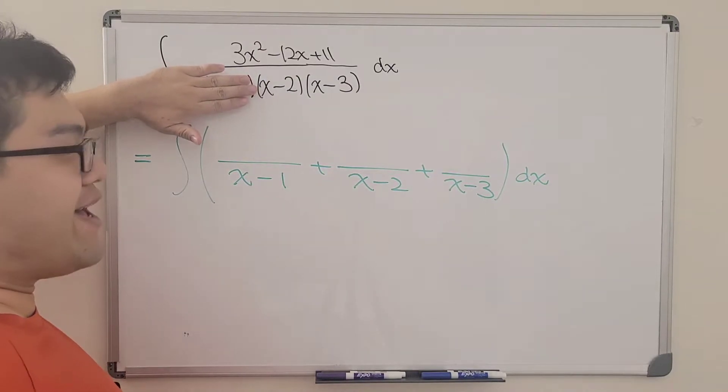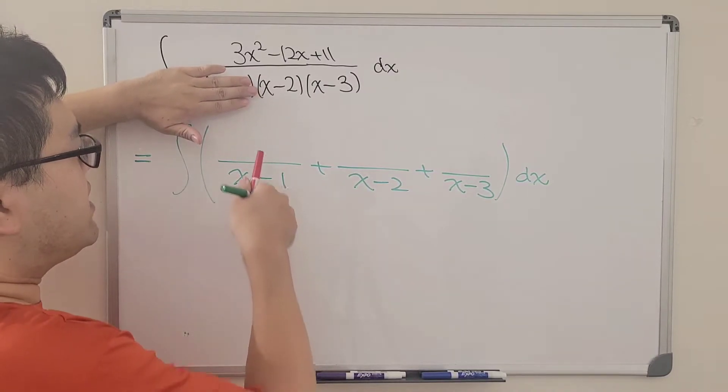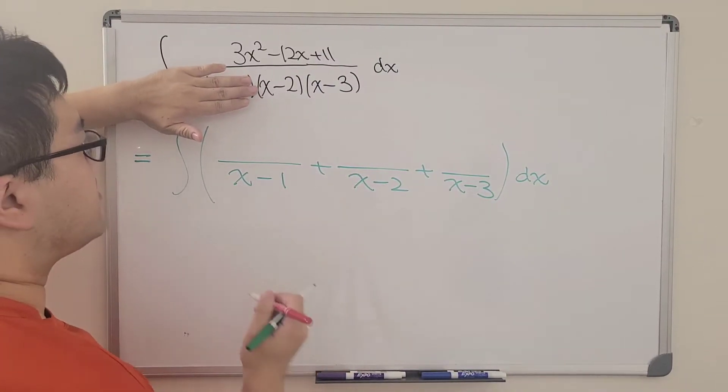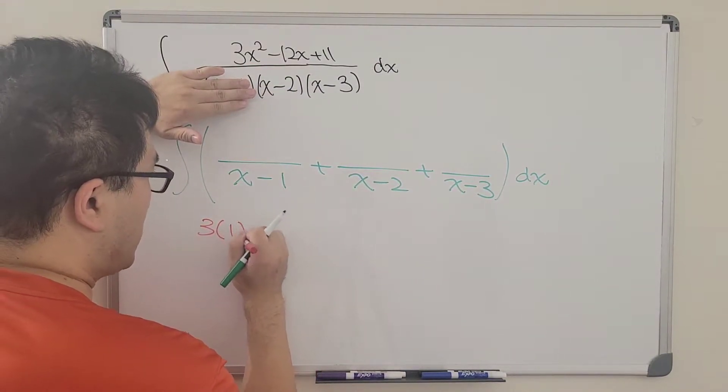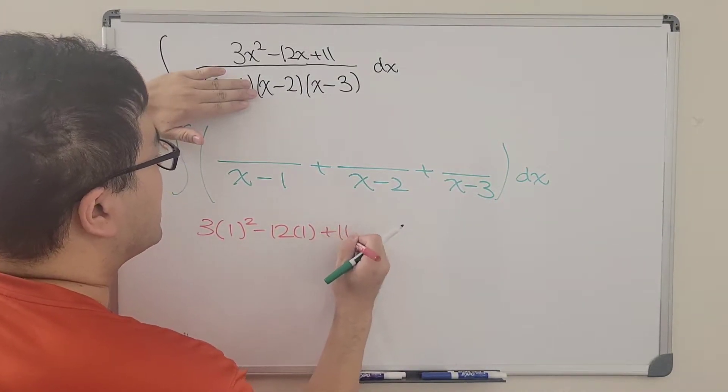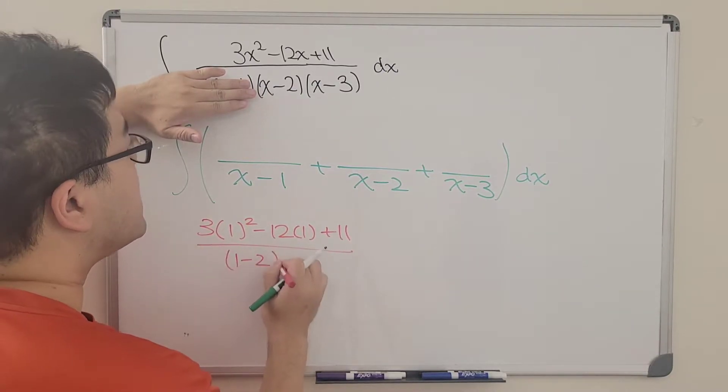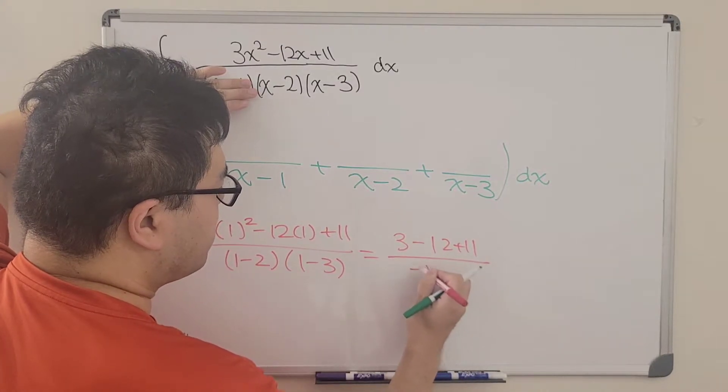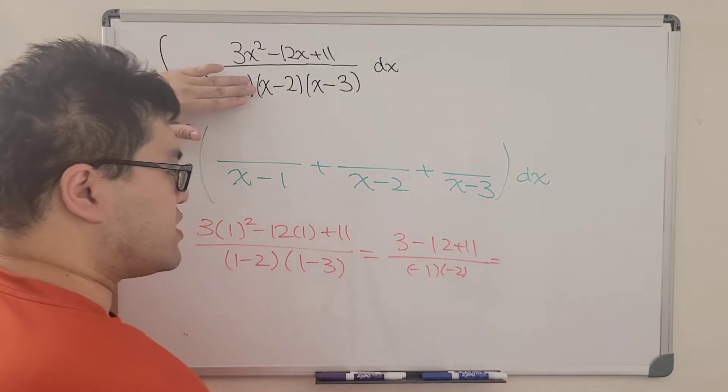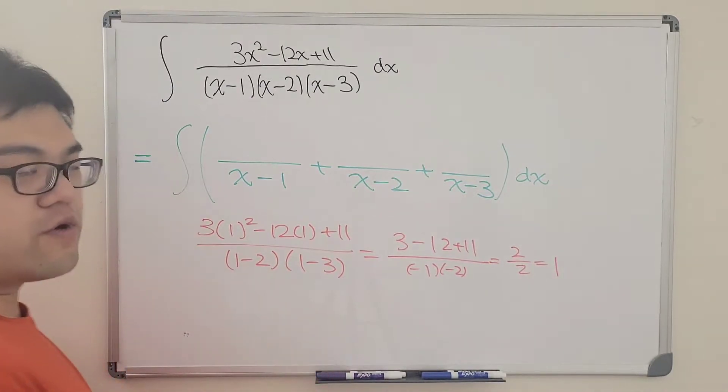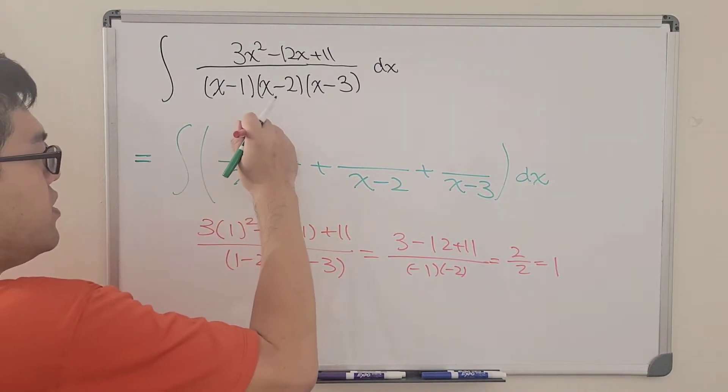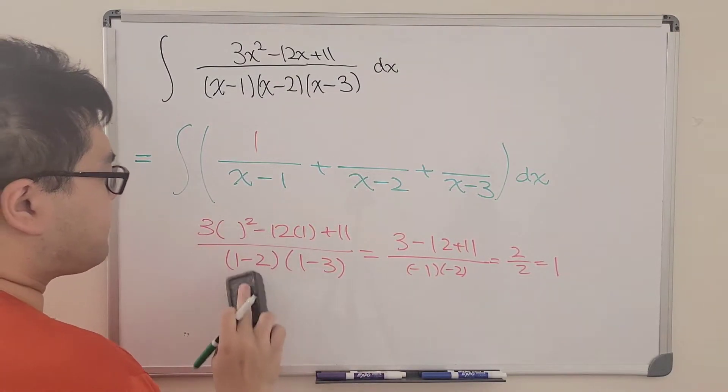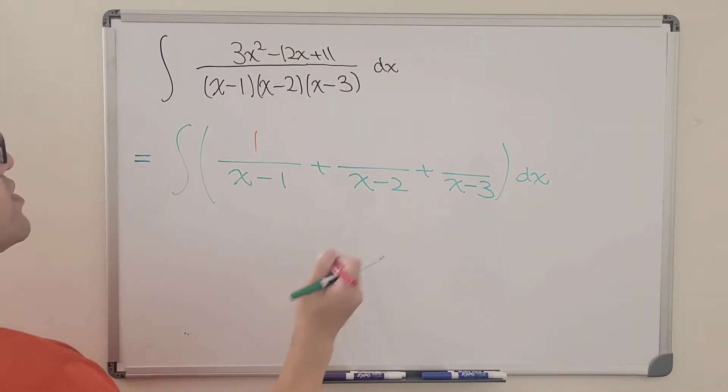Well, for example, for x minus 1 term, we're going to look at the original function here and we're going to cover the x minus 1 term so that now we only have the remaining part. Then we're going to replace the x by 1 and find out what the value is and that will give us the numerator of x minus 1 term. So let me use the red pen to do the structure. We get 3 times 1 squared minus 12 times 1 plus 11 all over 1 minus 2 times 1 minus 3, which is, if we simplify, we get 3 minus 12 plus 11 all over negative 1 times negative 2. And if we simplify again, we get 2 over 2, which is 1. Great! We found the constant term here, which is 1.